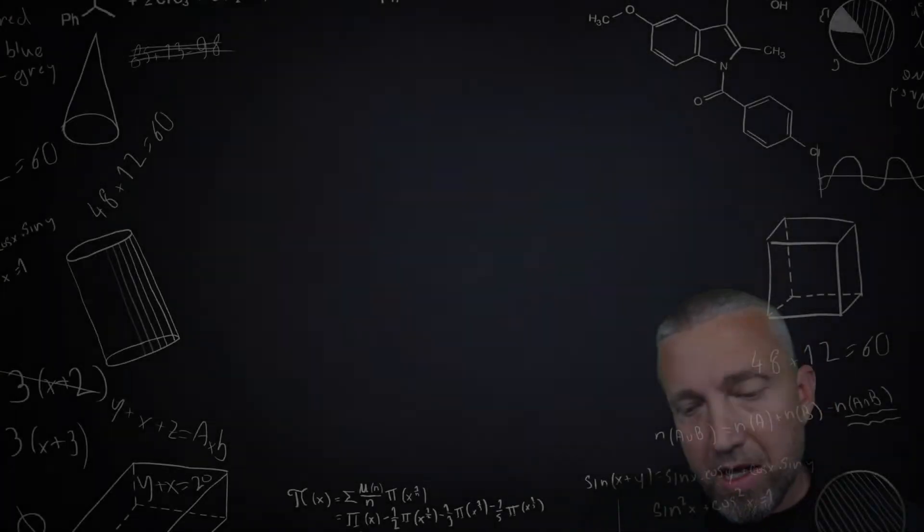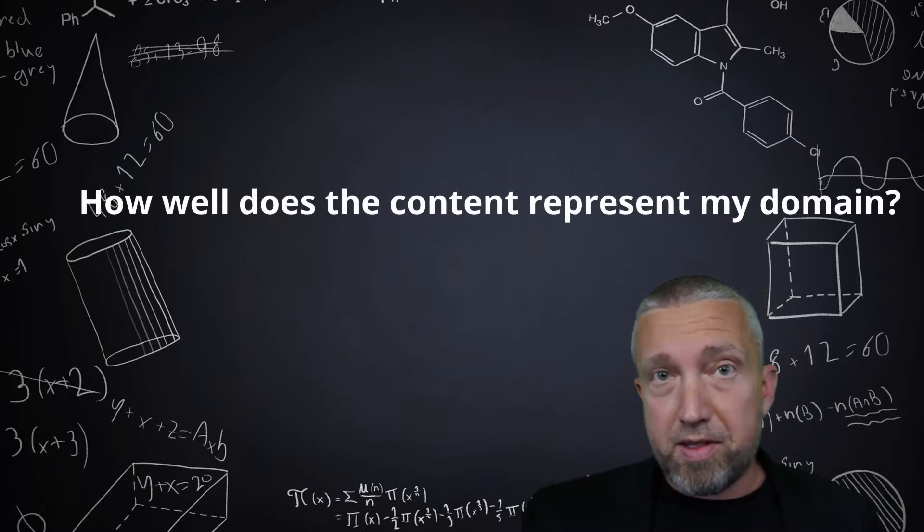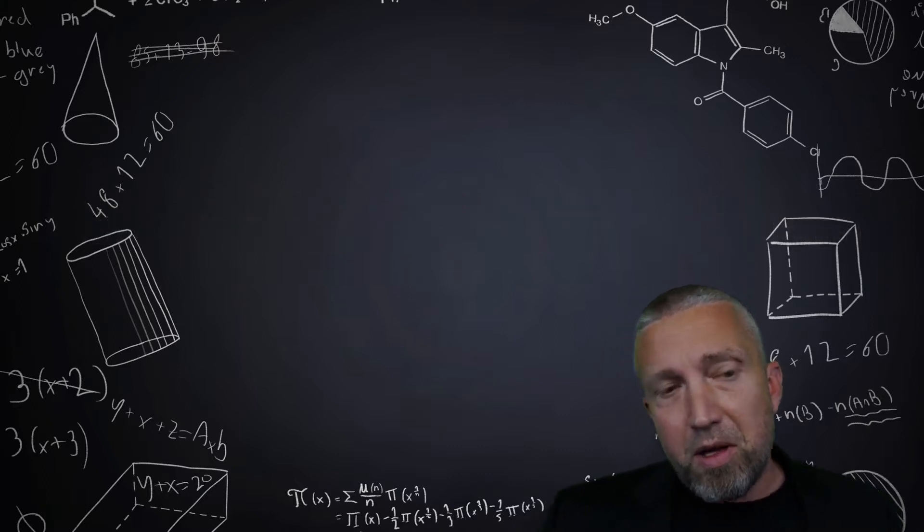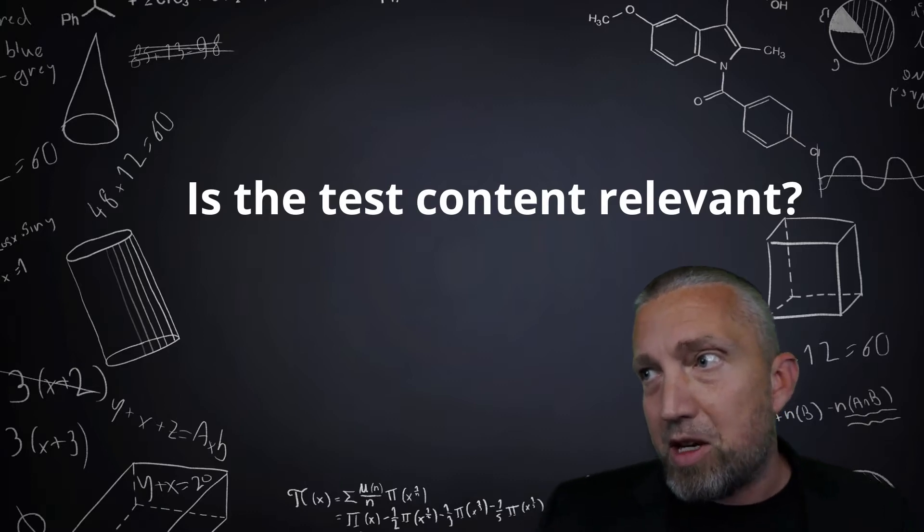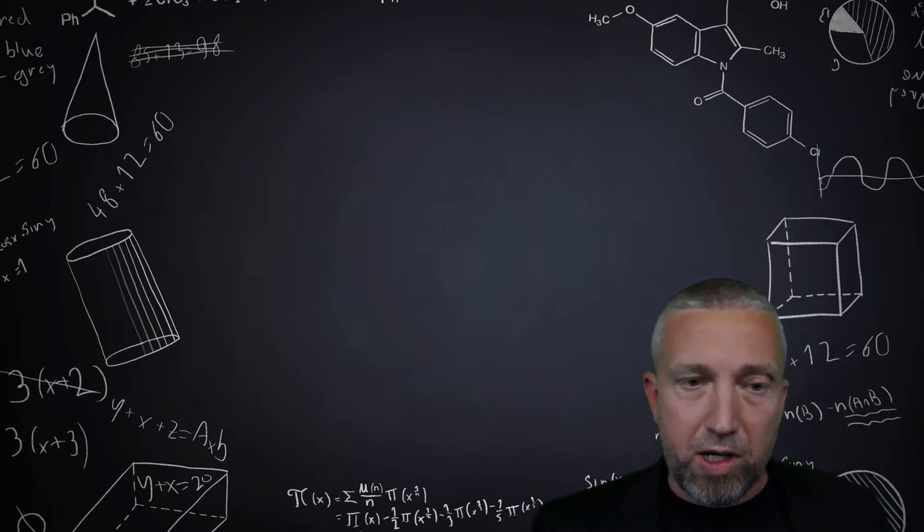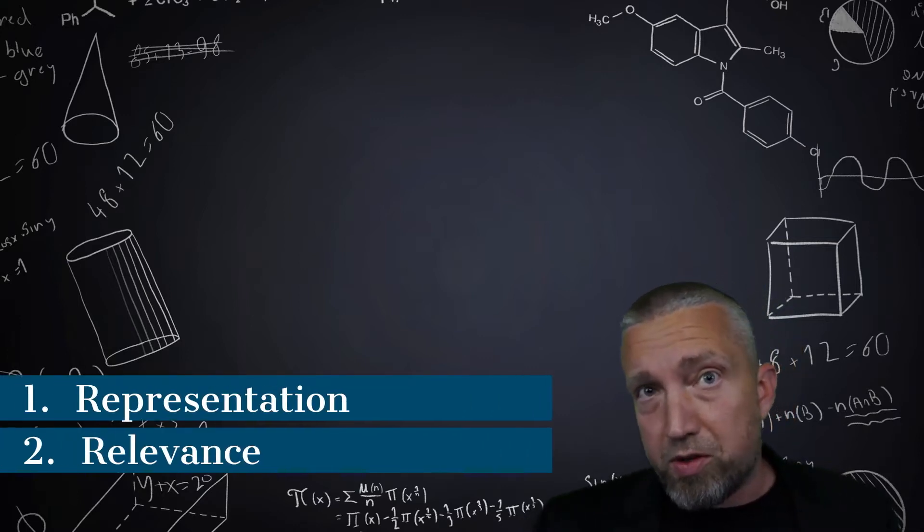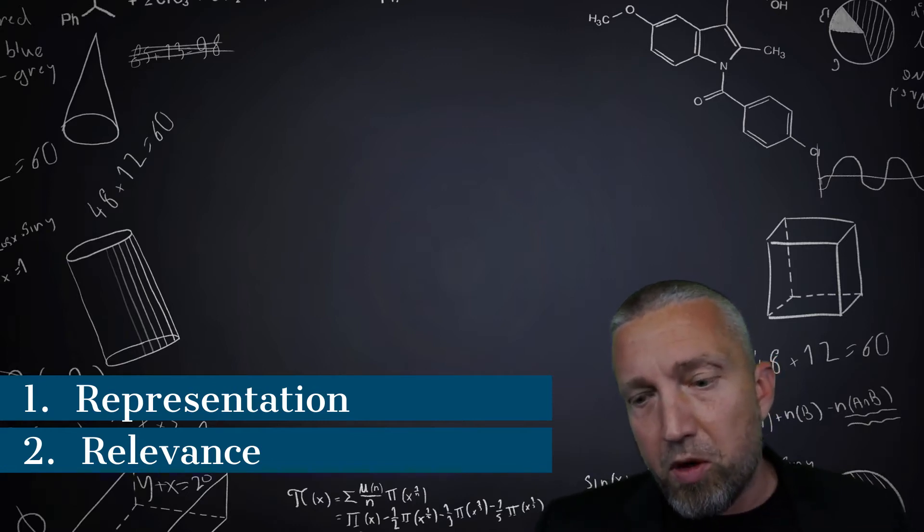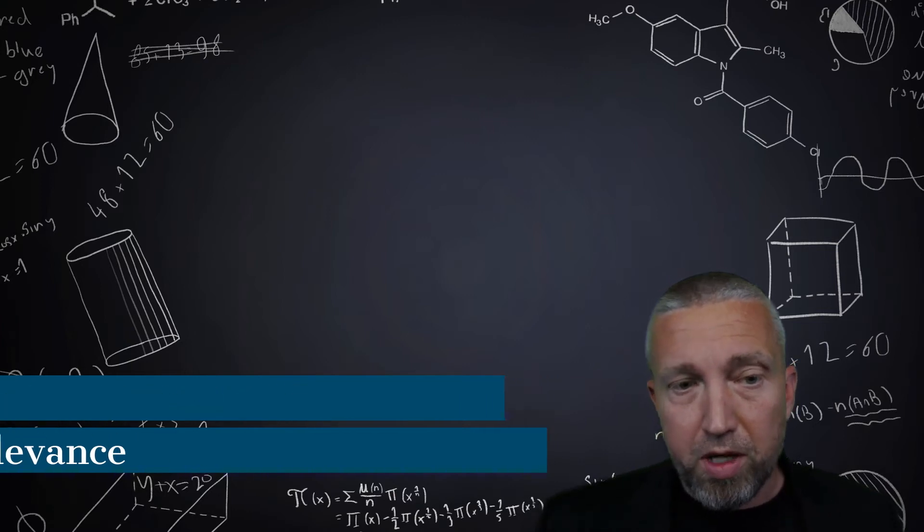Given this situation, there are a couple questions we could ask. Does my content on the test represent this theoretical domain of possible content? Maybe I'm missing something important. The other question would be about the relevance of my content. Maybe I'm asking irrelevant content or content that students haven't been taught. Whenever we're talking about content validity, we're interested in the extent to which my items represent this theoretical universe of possibilities, as well as the relevance of my items. We want our items to be representative and relevant.